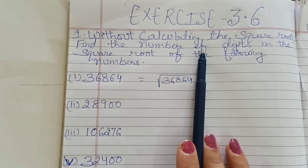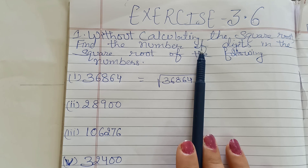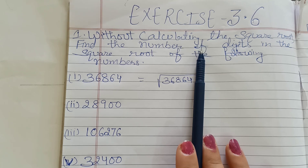For example, if we find out the square root of 64, it is 8. So the number of digits in the square root of 64 is 1 digit. Square root of 4 is 2, so square root of 4 has only 1 digit. Square root of 144 is 12, so square root of 144 has 2 digits.